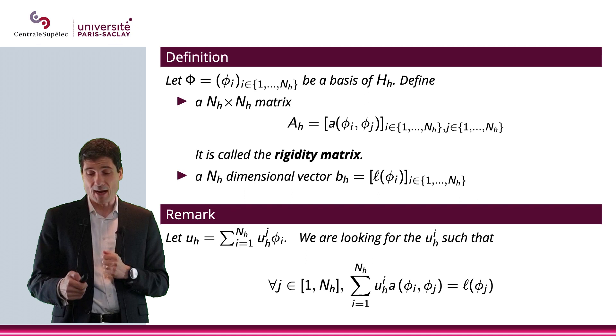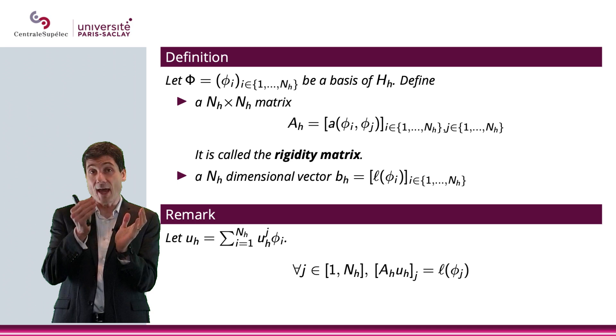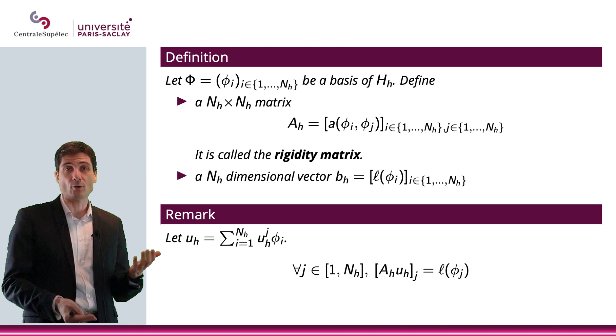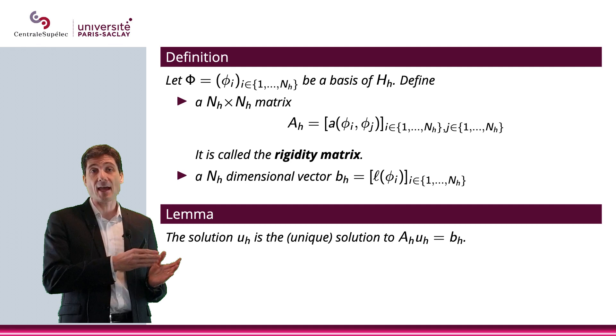So, here is what I'm saying is that the sum for i equals 1 to Nₕ of a(φᵢ, φⱼ) multiplied by uₕⁱ is equal to ℓ(φⱼ). But I can write this in a matrix form, and I can say that this is basically Aₕuₕ, for which I take the jth line, and that is equal to ℓ(φⱼ). And that must be true for all j, integers j, in between 1 and Nₕ. So, in other words, what I have is Aₕuₕ equals bₕ.